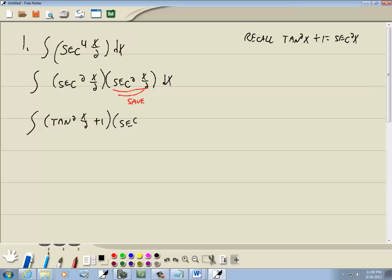So we got tangent squared x over 2 plus 1 times our secant squared, and we're saving x over 2 dx. Now this is like the distributive property. We're going to take this and multiply it times that and times that.